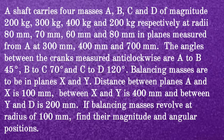The balancing masses are to be in planes X and Y. The distance between planes A and X is 100 mm, between X and Y is 400 mm, and between Y and D is 200 mm. If the balancing masses revolve at a radius of 100 mm, find their magnitude and angular positions.